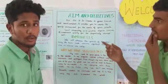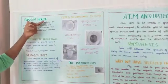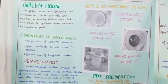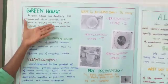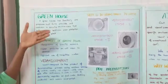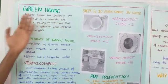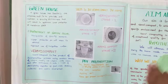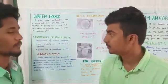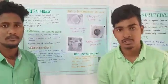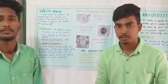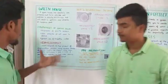Now we are going to the main theme of greenhouse. A greenhouse has basically one purpose: to provide and maintain a growing environment that will result in optimum crop protection at maximum yield. Advantages of greenhouse include manipulation of growing seasons, high value and high quality crops can be grown, and all vegetables can grow in a greenhouse.